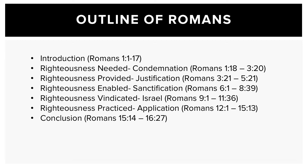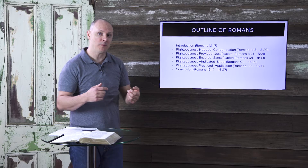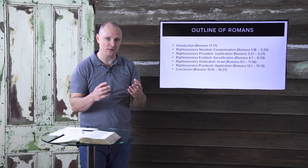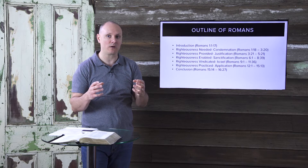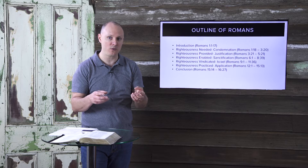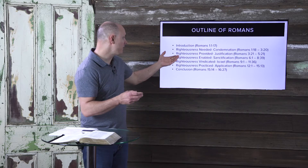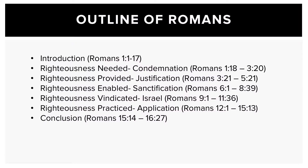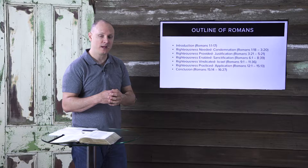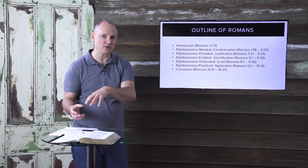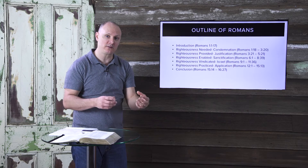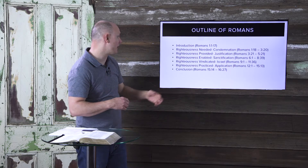Then we moved into the section called righteousness needed condemnation, where Paul unifies his audience by showing that both Jew and Gentile are under God's wrath, that there's no distinction. After that, he gives us the answer to this problem: righteousness provided justification. Just as both Jew and Gentile were united in their condemnation under God, both can be justified by faith through the Lord Jesus Christ.